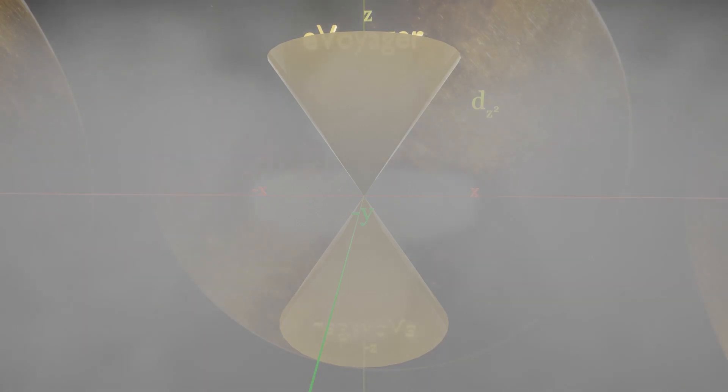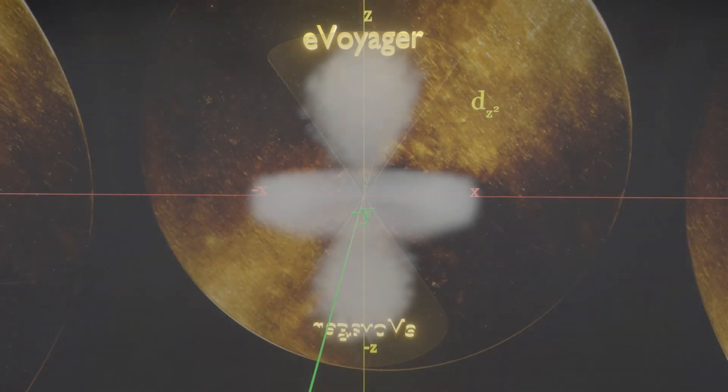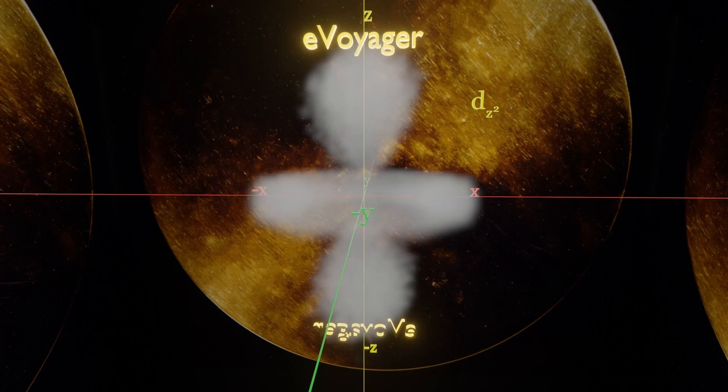And for 3dz square, this is the result. So there we have it, the donut and dumbbell shape of dz square.